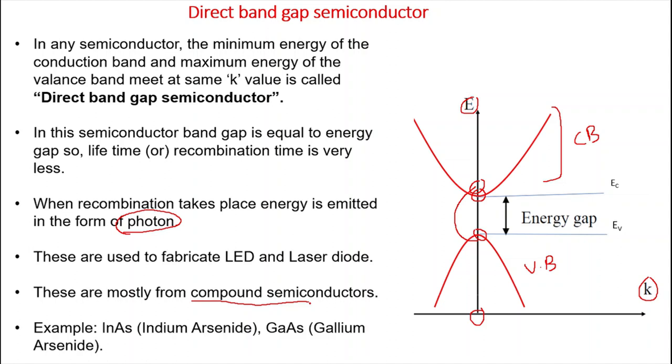Mostly, direct bandgap semiconductors are compound semiconductors, meaning they contain more than one element in the material. Examples: indium arsenide and gallium arsenide are the best examples.